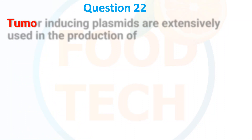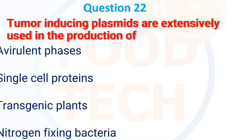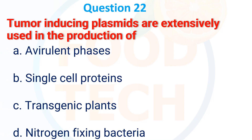Tumors including plasmids are extensively used in the production of: A. Virulence base, B. Single cell protein, C. Transgenic plant, D. Nitrogen fixation bacteria. The answer is C: Transgenic plant.